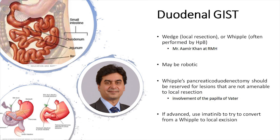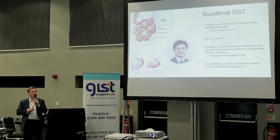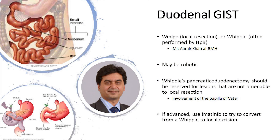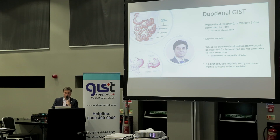The duodenum is quite difficult — sometimes you need quite big surgery. What we try to do is a wedge resection, just taking a little bit of the duodenum out. Otherwise, because of the blood supply, if you have a big GIST, you might need what's called a Whipple's procedure — a very big operation where you take out the head of the pancreas, the end of the stomach, the gallbladder, and then reconstruct. People with duodenal GISTs are best served in a place with expertise in both hepatobiliary surgery and GIST. We always try to give imatinib first, because even if tumours are small, shrinking them back might avoid such big surgery.